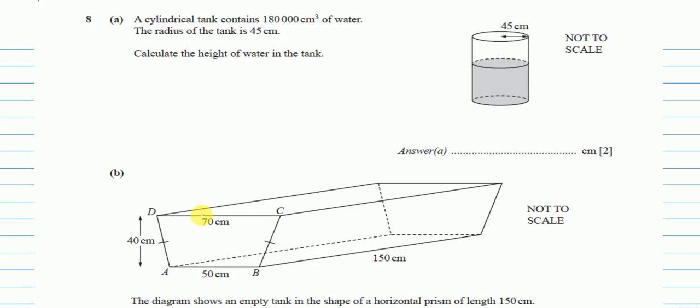Question number 8: a cylindrical tank contains 180,000 centimeter cube of water — that's the volume. Anything in cube is volume. The radius is 45 centimeters.